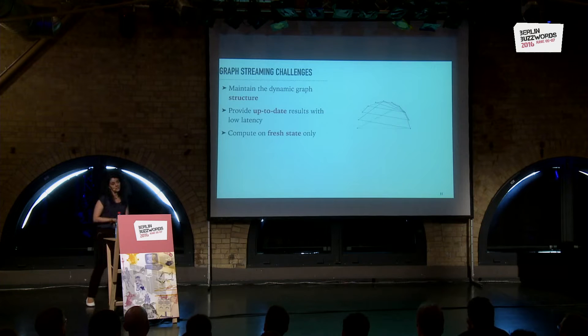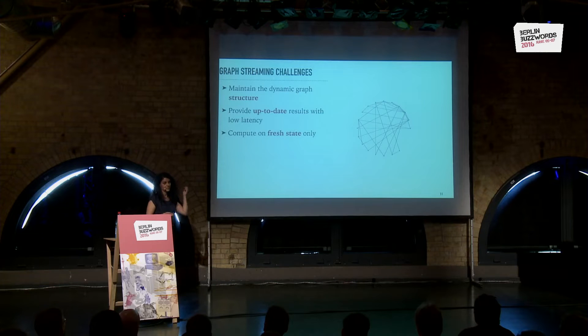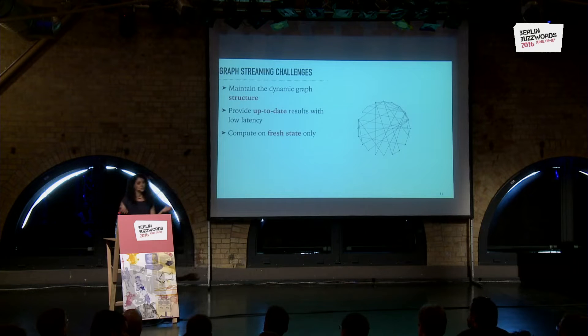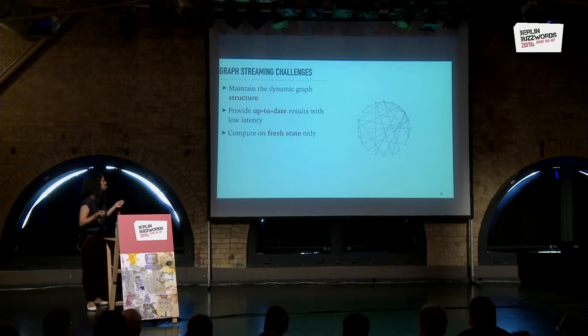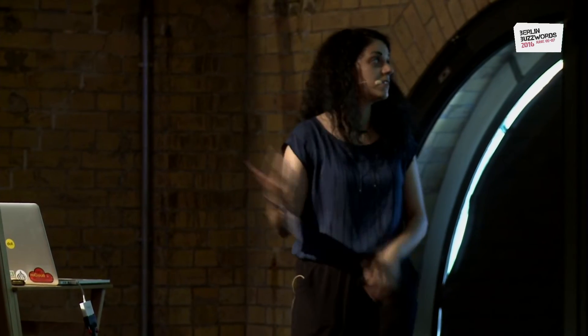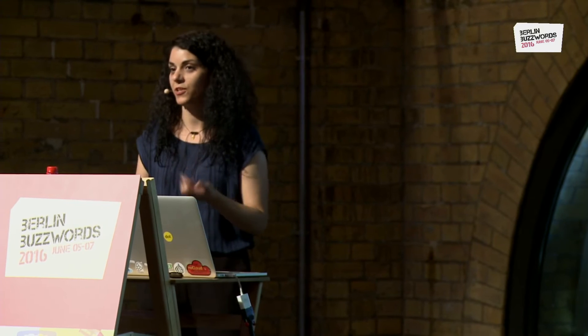There are many challenges that don't appear in other areas of streaming applications. First, we have to somehow maintain the graph structure, because at the core of graph applications are the graphs themselves — we need to know the neighbors of a vertex, we need to know the paths, we need to traverse the graph. Then we need to maintain up-to-date results when the input changes, and compute on fresh state only. In streaming applications, we are interested in the latest state.